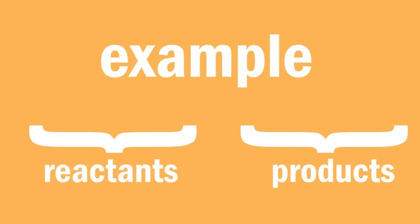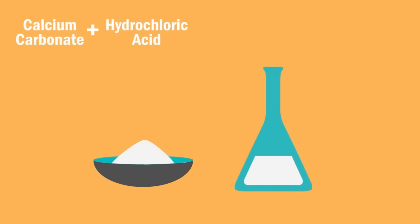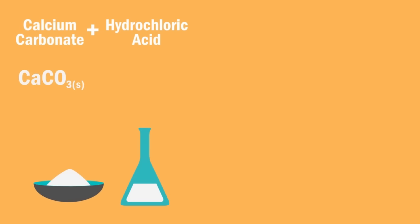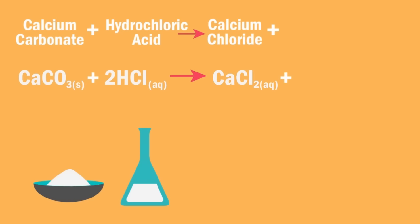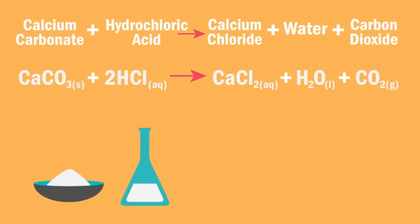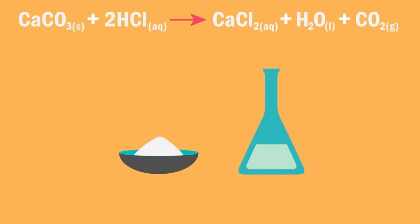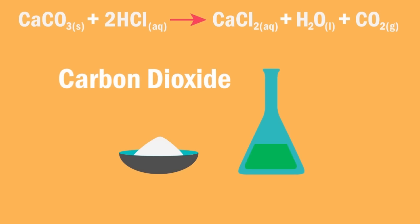Looking at an example for each of these two methods will help you understand this. For way one — measuring how quickly reactants decrease — our example is a reaction between marble chips (calcium carbonate) and hydrochloric acid. This reaction has reactants calcium carbonate and hydrochloric acid, resulting in the products calcium chloride, water, and carbon dioxide.